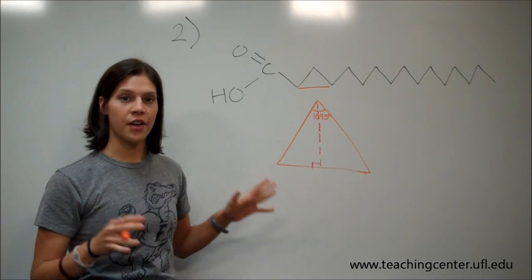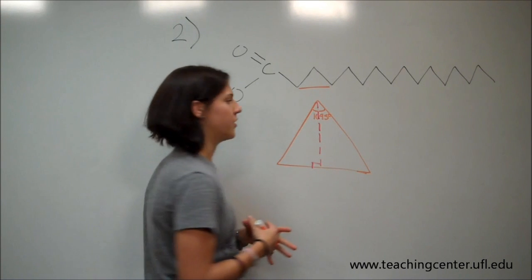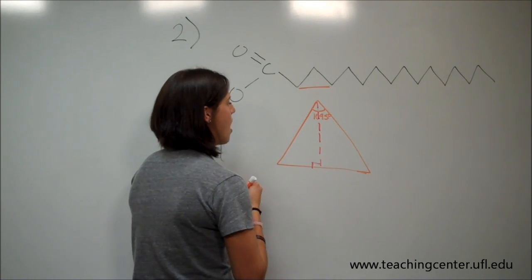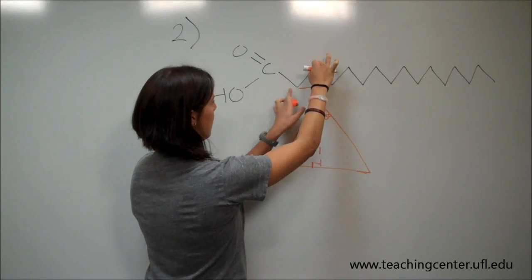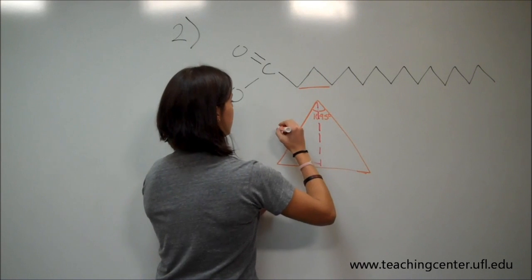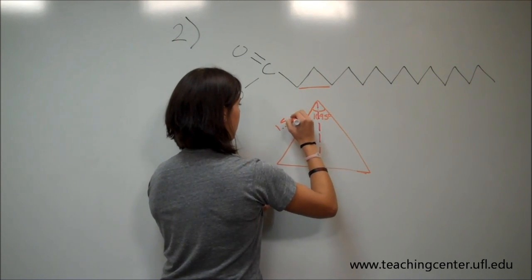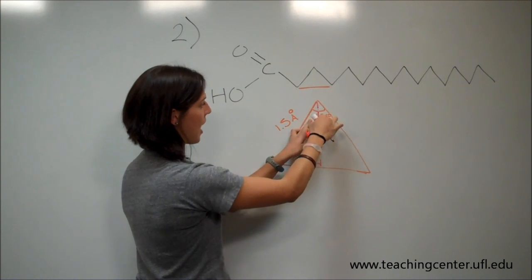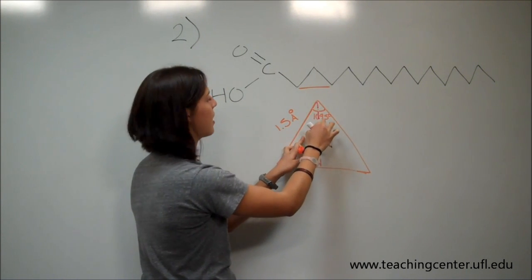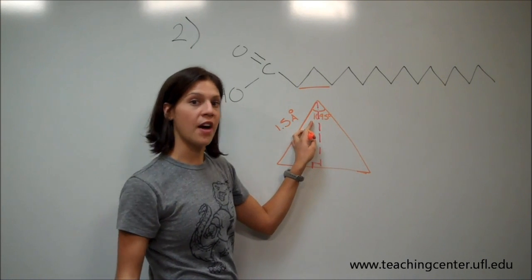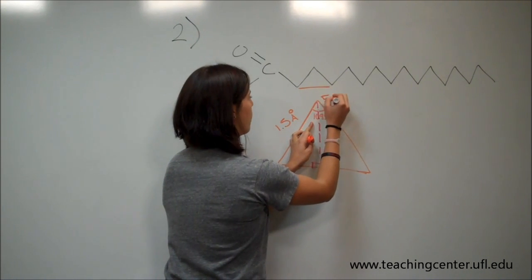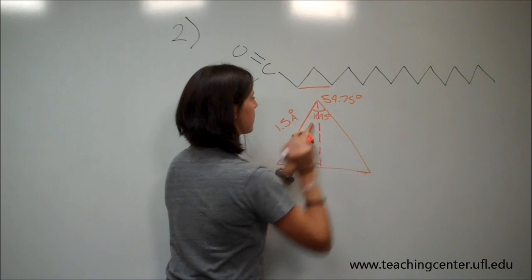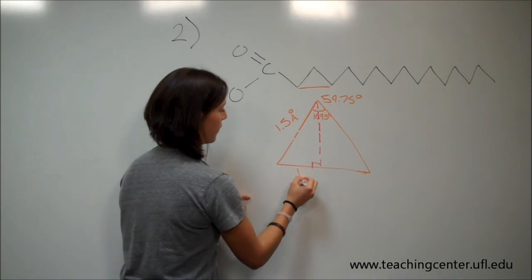So this is what we have right now. This is a basic understanding of what we need to do. This distance here is 1.5 angstroms long. And since we're only using half of this triangle, we're going to cut this in half. So instead of having 109.5, we're going to use 54.75 degrees. And we're solving for X.